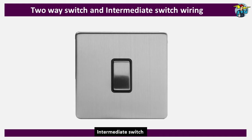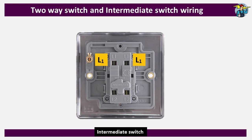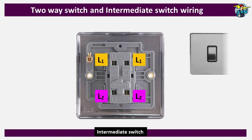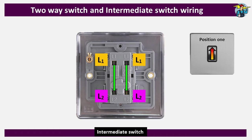Now let's see how an intermediate switch works. Like the two-way switch, an intermediate switch cannot be identified from its front view. On the rear side you will see two L1 terminals on top and two L2 terminals at the bottom. With the switch at upward position — marked as position 1 — the first L1 terminal connects to the L2 terminal directly under it, and the second L1 terminal also connects to the L2 terminal directly under it.